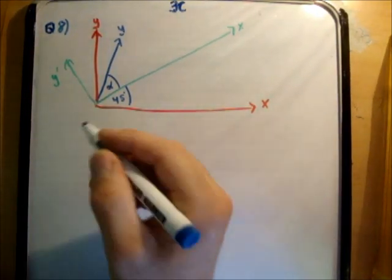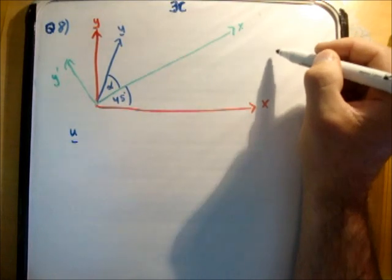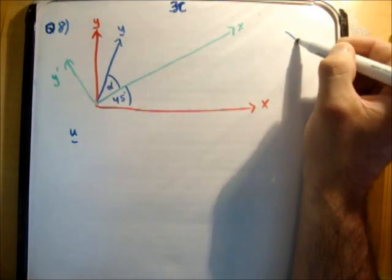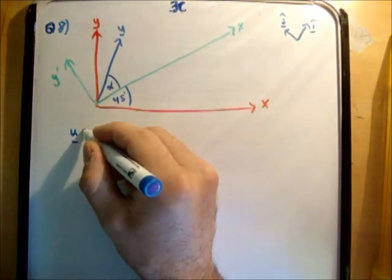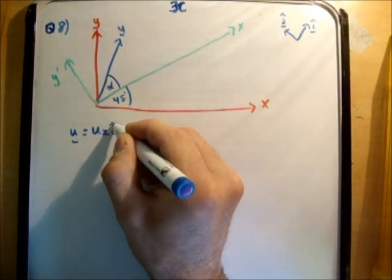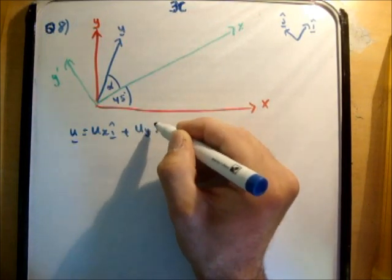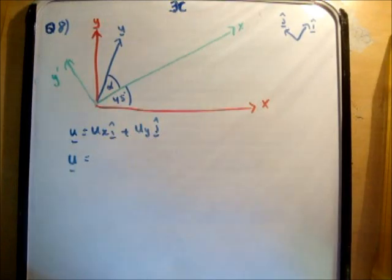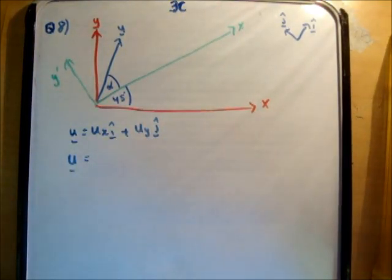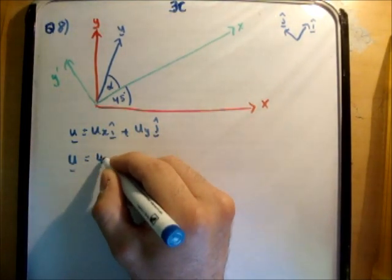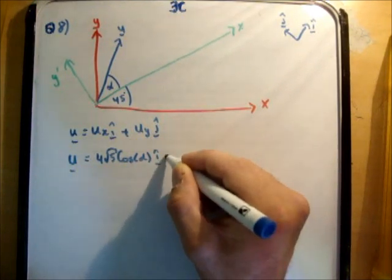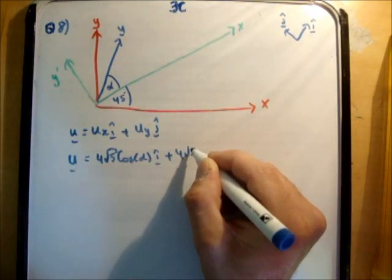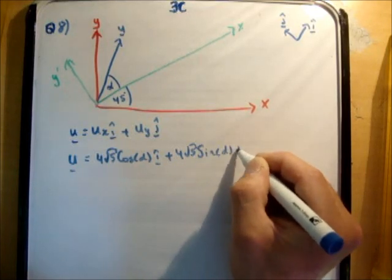Next thing we need to do is resolve our velocity vector. So u, actually I'll define my unit vectors like so. This is i-hat, this is j-hat. So u is equal to u sub x i-hat plus u sub y j-hat. u is equal to, now we're given, we'll say the magnitude of the velocity, which is 4 root, or the speed, which is 4 root 5. So 4 root 5 cos alpha i-hat plus 4 root 5 times the sine of alpha j-hat.